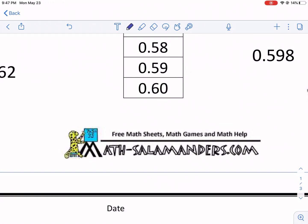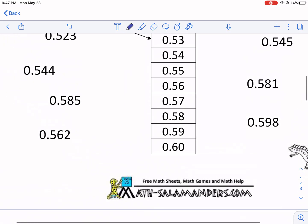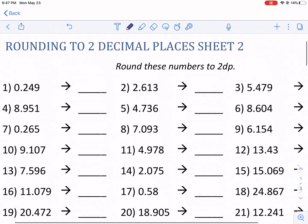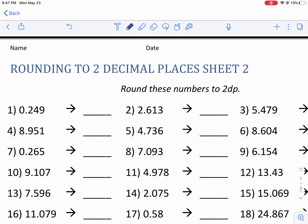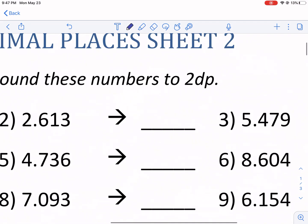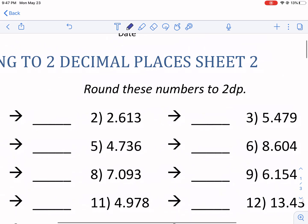Hi everyone, this is Mr. West. Right now you're watching a Math Salamanders walkthrough video. This is concerning rounding to two decimal places sheet two. Now that's what the DP stands for in case you're wondering, it's decimal places.